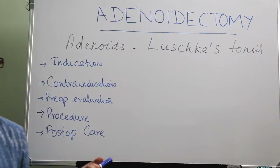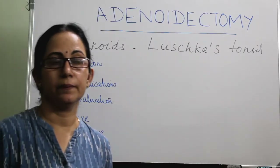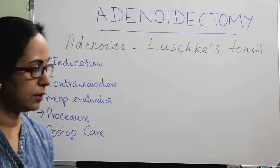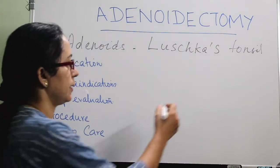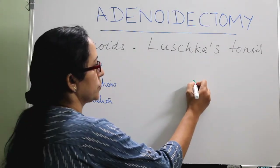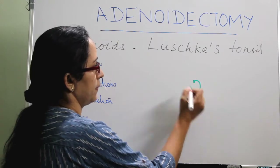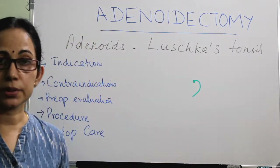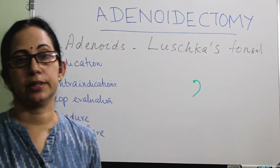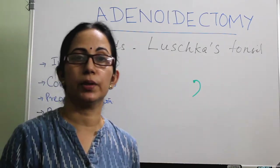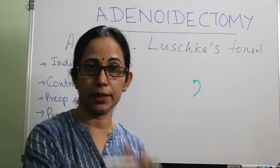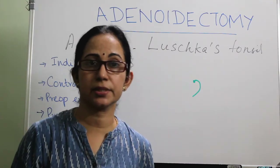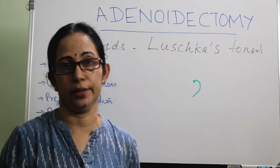Endoscopic procedures giving direct vision are preferred over the traditional transoral curettage technique because they cause reduced blood loss. Average blood loss under direct vision is around 4 ml versus around 50 ml after a transoral curettage technique (which is a blind procedure) — 4 ml versus 50 ml, so direct vision is definitely a better option. Never use KTP laser as already explained. Immediately after extubation, the patient is kept in the coma position or tonsil position — turned to one side with the head low — so that aspiration is avoided.